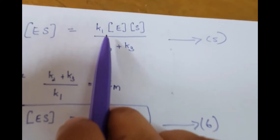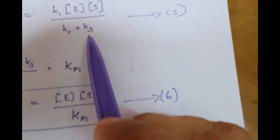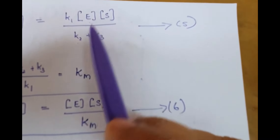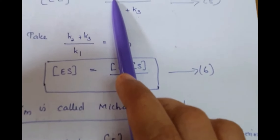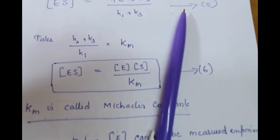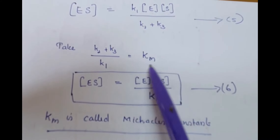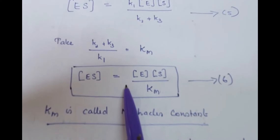We can calculate the concentration of ES: [ES] = [E] × [S] / (K2 + K3 / K1). We take the term (K2 + K3) / K1 as a constant called KM — the Michaelis constant. So [ES] = [E] × [S] / KM.